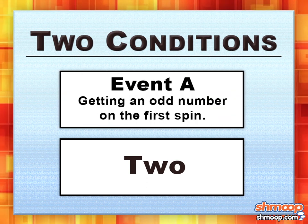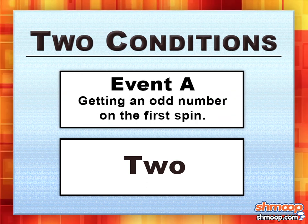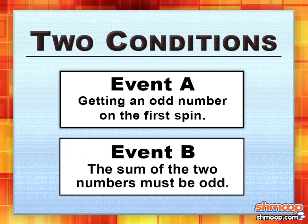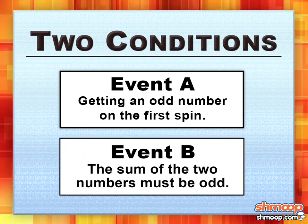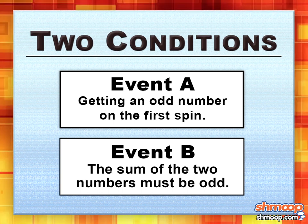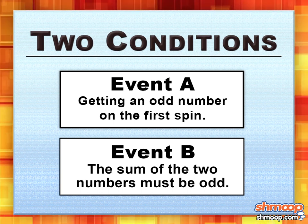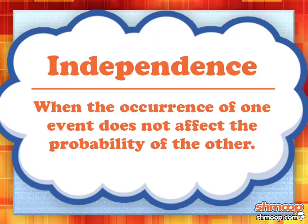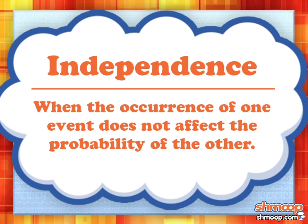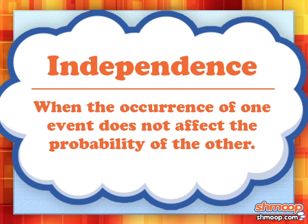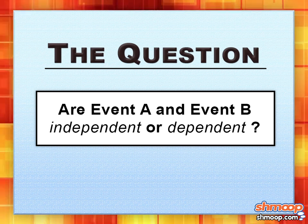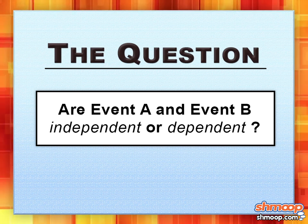One, you have to spin an odd number on the first spin. Two, the sum of the two numbers you spin must be odd. We want to know if, using the formal definition of independence — when the occurrence of one event does not affect the probability of the other — events A and B are independent or dependent.